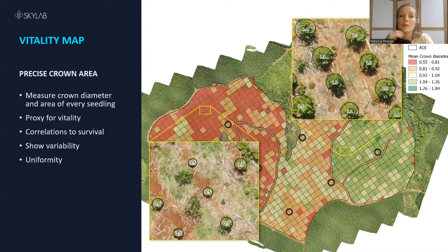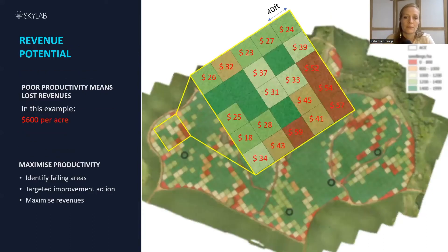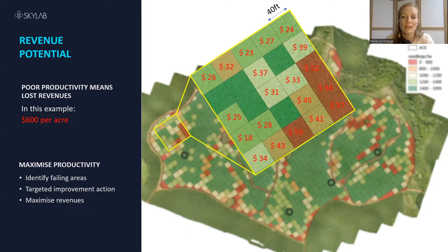On this map, you can see there is a significant difference in terms of vitality between the western and the eastern parts of the stand. In summary, all of this information gives you a complete picture of what's happening and can help you to avoid any losses and increase your productivity. This stand is a concrete example of the answer to my previous question about investing $1 to make $500, because in this case, if the forester had relied entirely on his initial terrestrial assessment, he would have missed out on about $600 per acre of unrealized revenue.